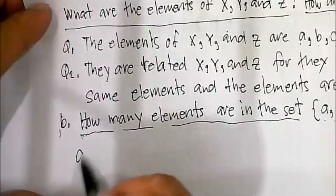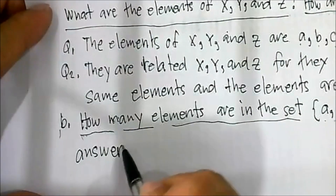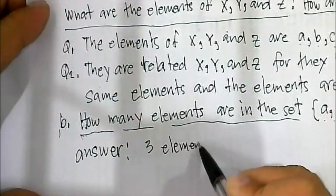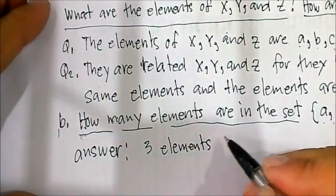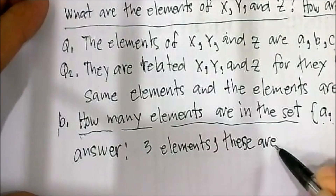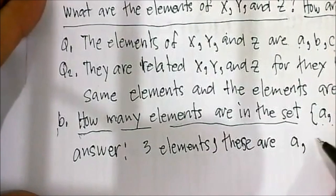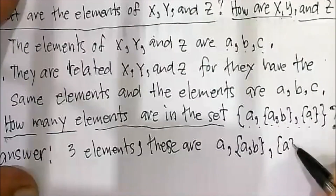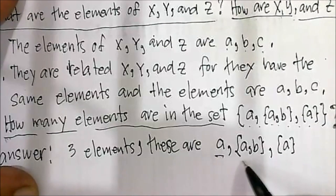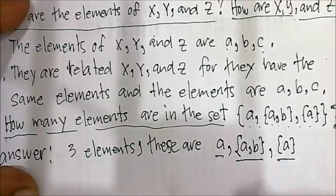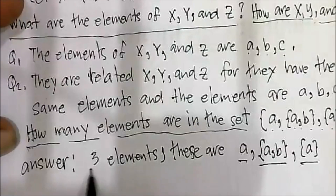The answer is three elements. These three elements are: a, the set {a,b}, and the set {a}. Therefore we have three elements.